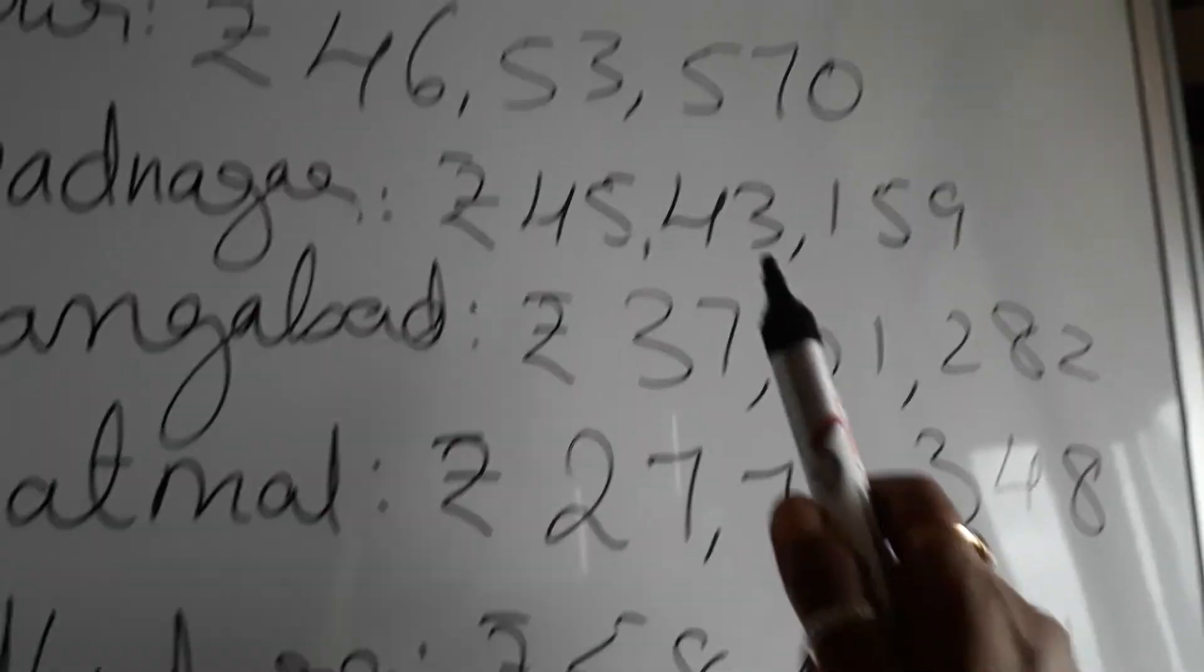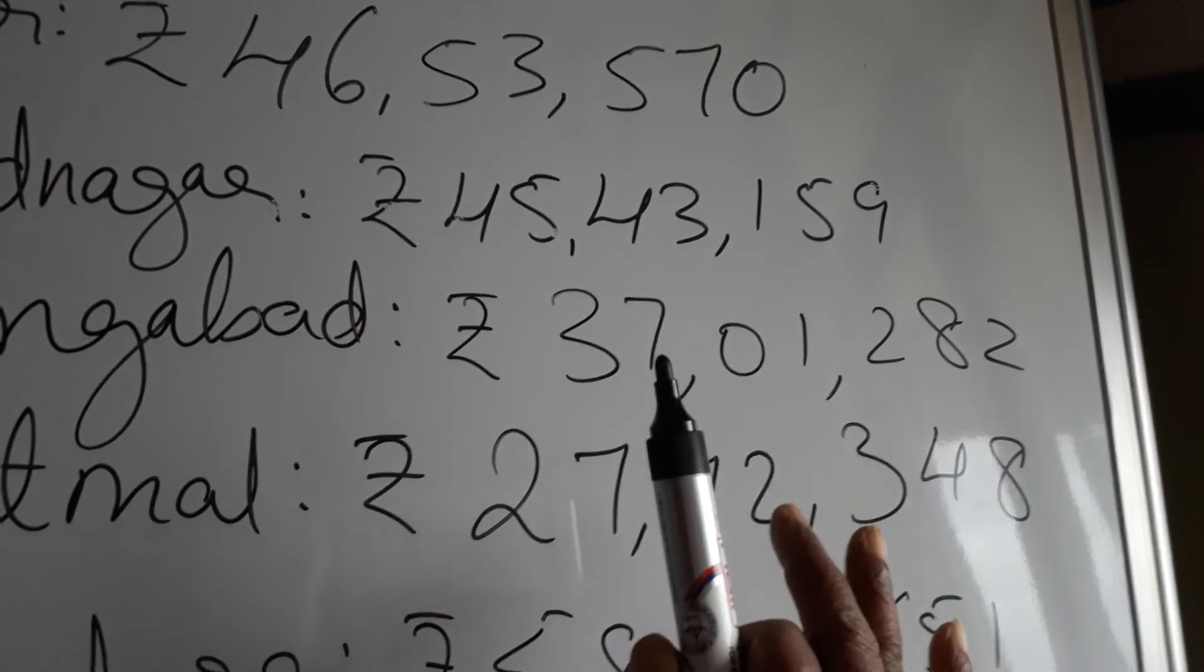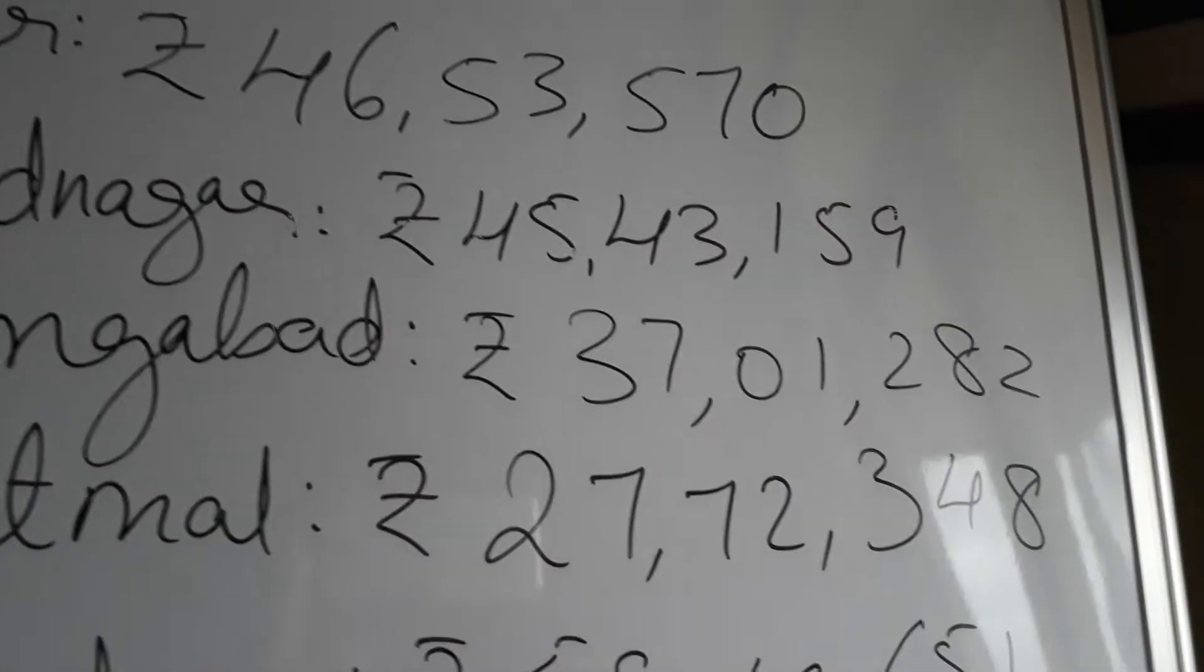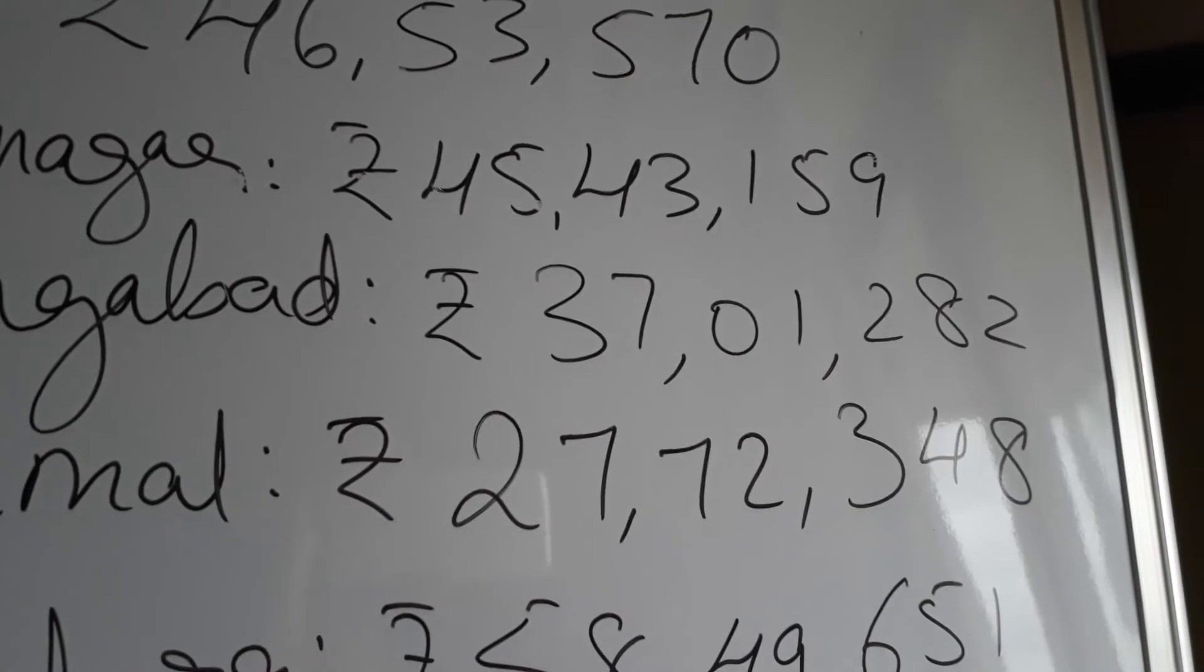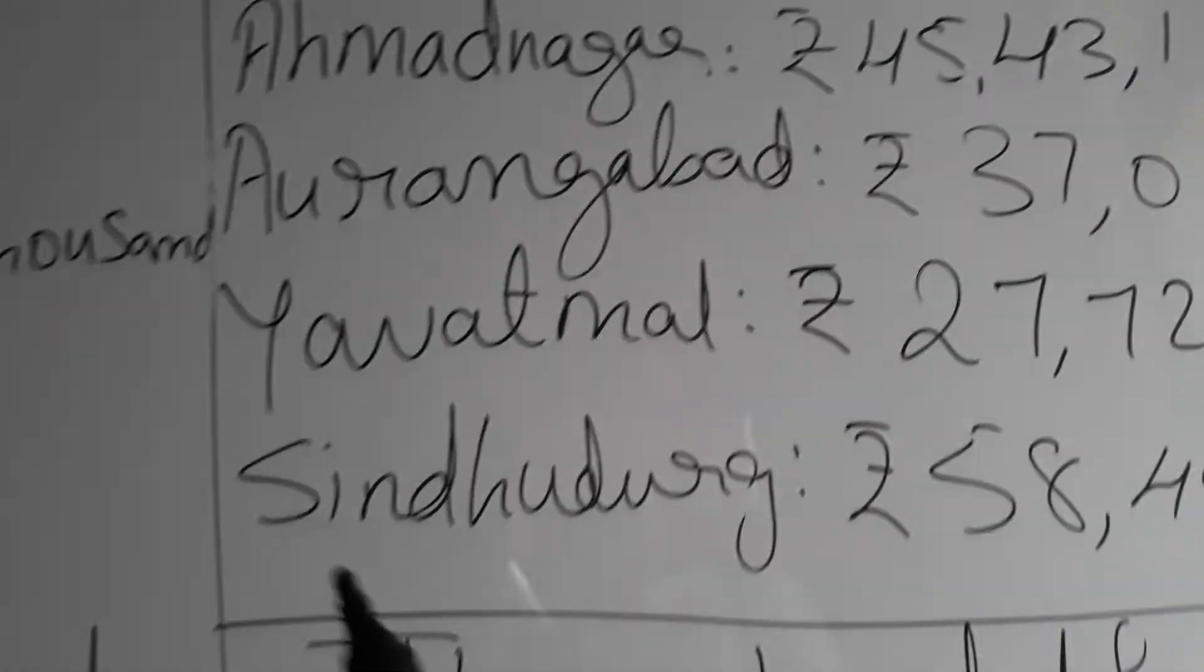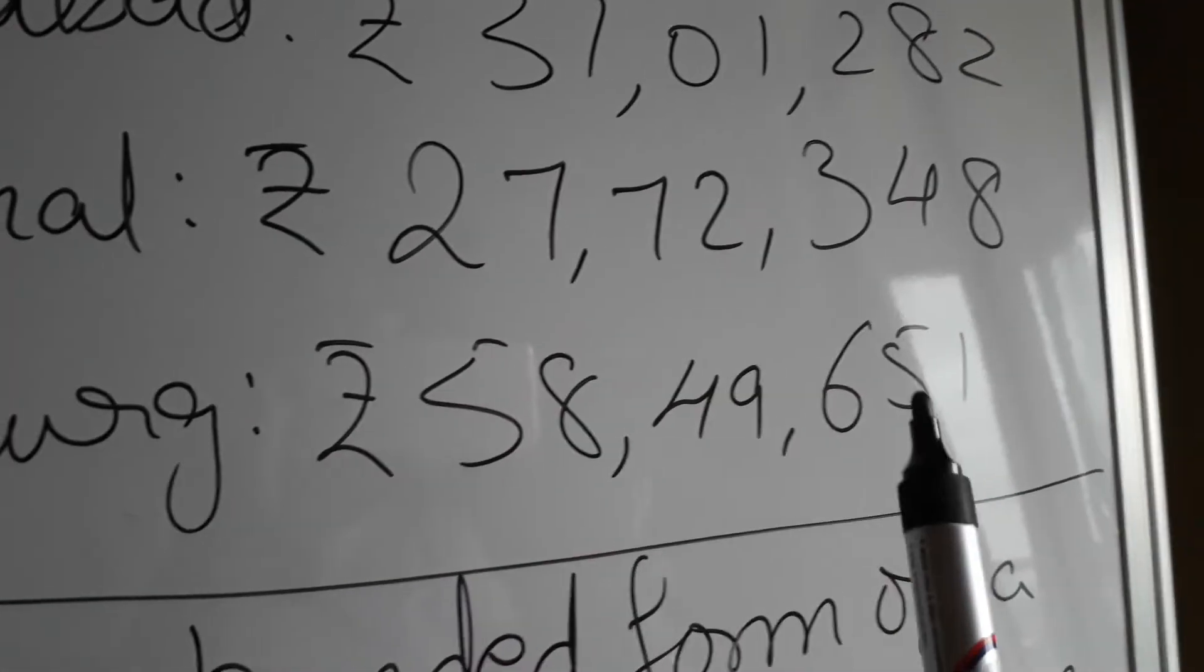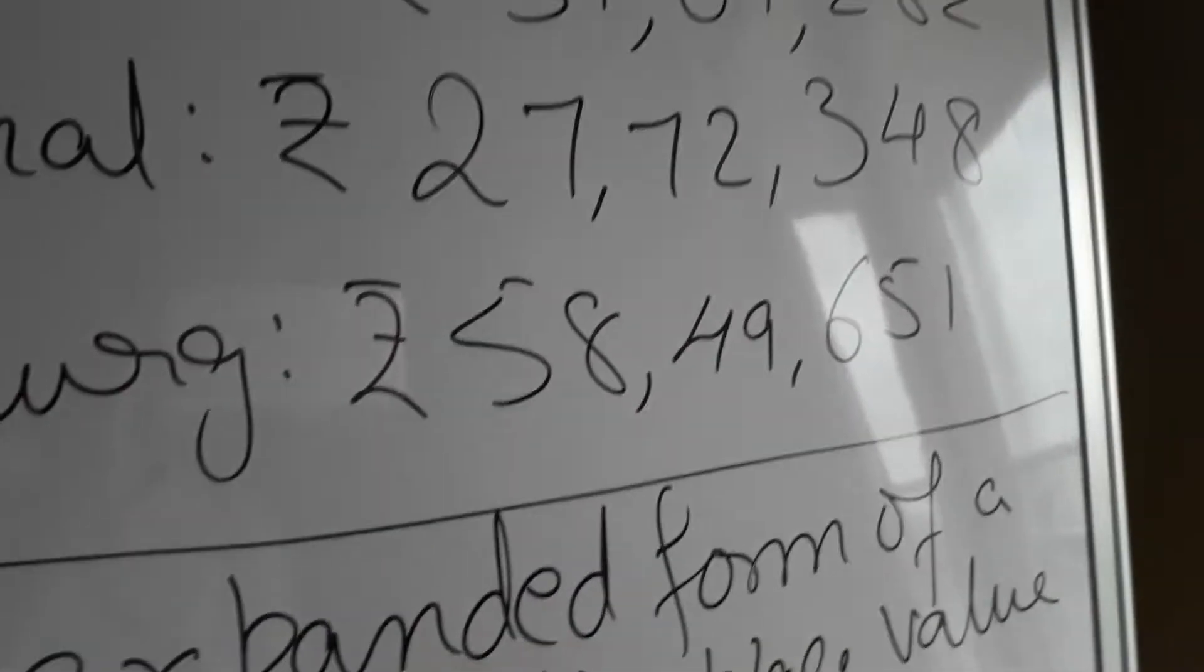Yavatmal: rupees 27 lakh, 72,348. Let's come to this. Did you notice me making a mistake? I did not do it deliberately, it happened. That is why we have to read loudly. Sometimes in our mind also we might read wrong, we might read it as thousand or lakhs. So that's why we need to read it loudly, children. Sindhudurg: rupees 58 lakh, 49,651. Hope this is clear to you children.